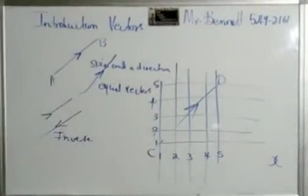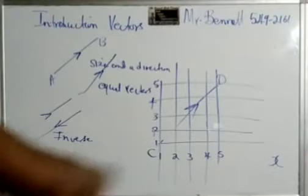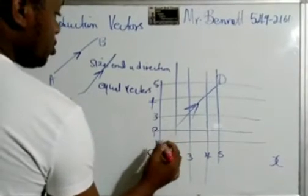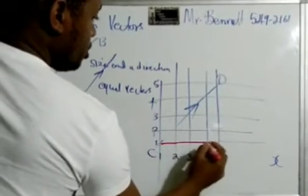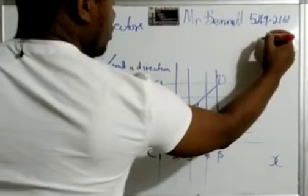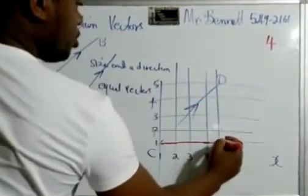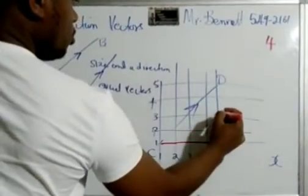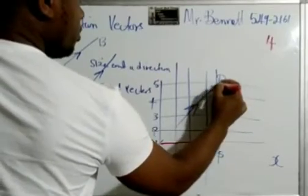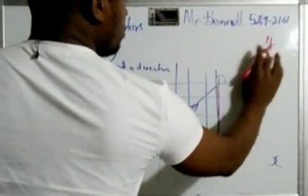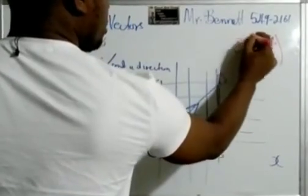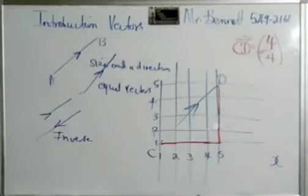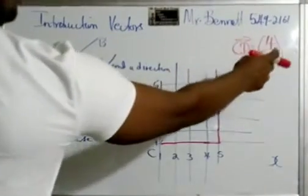Now it's defined by going how many units on the x-axis. So this is one, two, three, four. So if you're going to express this in column, that would be four. And up, one, two, three, four. So if we express CD in column vector, it would be (4, 4). And it reads from C to D.